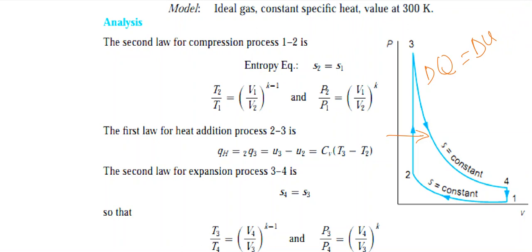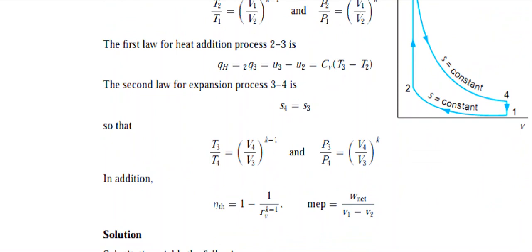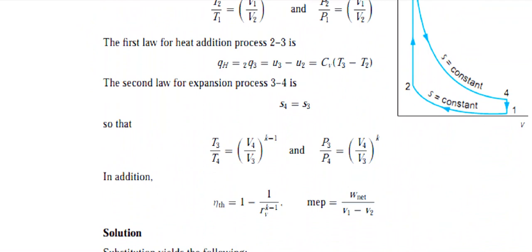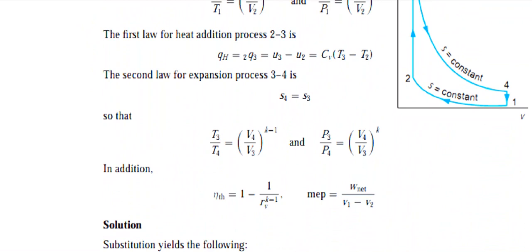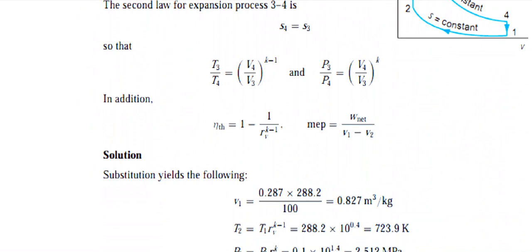The heat addition QH = CV·(T3 - T2). For the adiabatic expansion from 3 to 4, the same adiabatic formulas apply. From 4 to 1 is constant volume heat rejection. The thermal efficiency formula is η = 1 - 1/R^(γ-1), where R is the compression ratio (given as 10) and γ = 1.4. Mean effective pressure = net work / stroke volume = W_net / (V1 - V2).